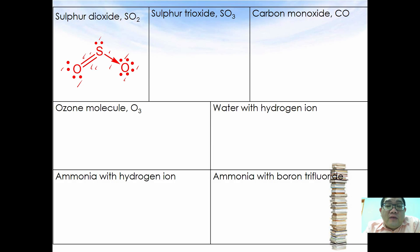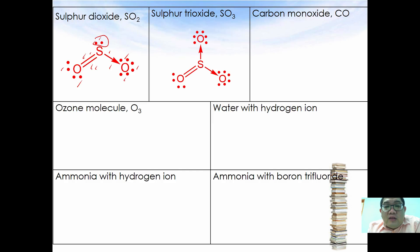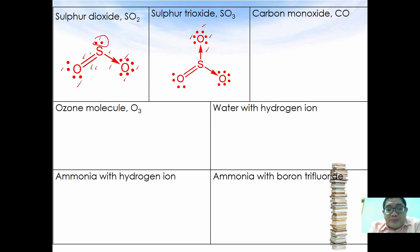If there is an extra electron pair, as in sulfur trioxide, another dative bond is also formed between S and O, so that the oxygen also achieves octet: two, four, six, and eight.